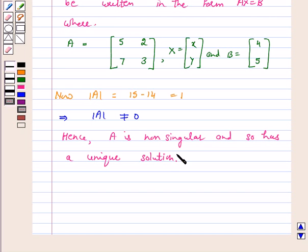Now we will find the solution by the matrix method. Since A is non-singular, its inverse exists, so let us first find out adjoint of A.